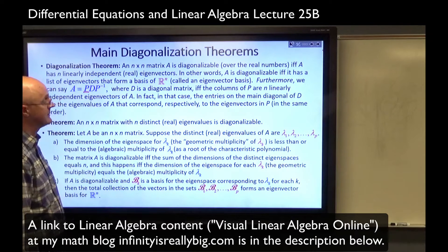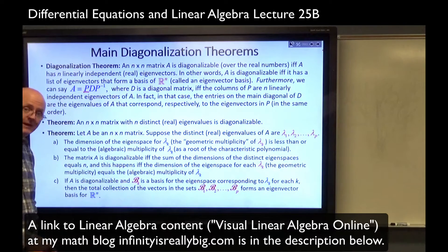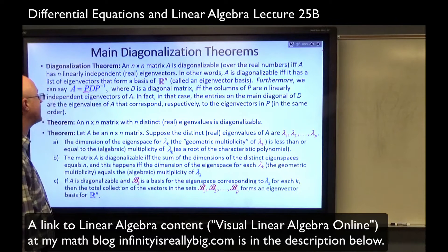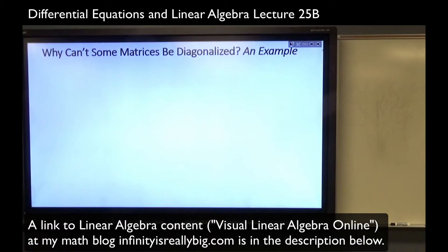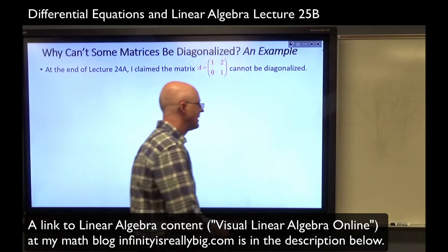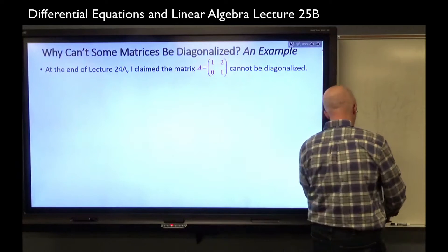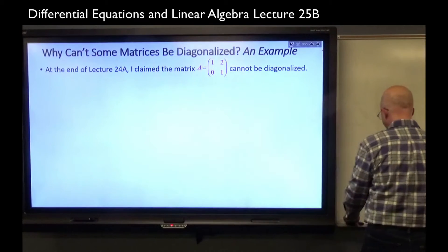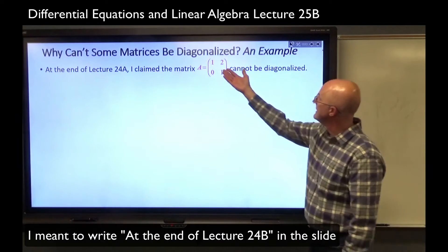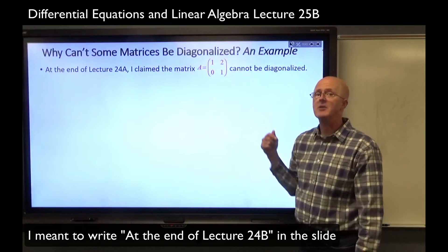Alright, so those are the theorems. For the rest of this video, we're going to look at examples. Why can't some matrices be diagonalized? It's the example I mentioned at the end of lecture 24b, this matrix. It's an upper-triangular matrix.